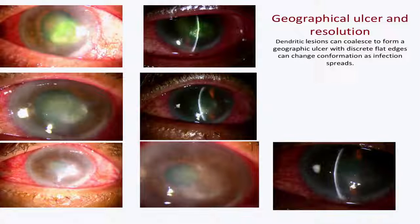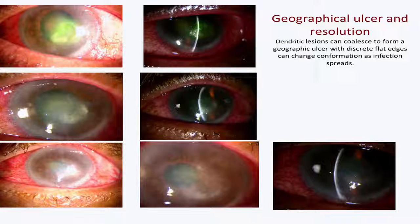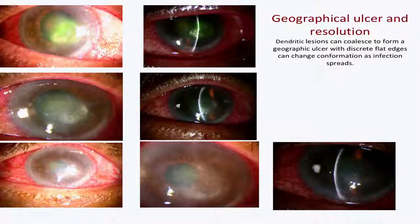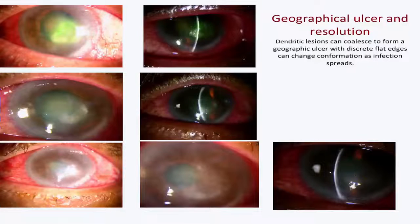After epithelial keratitis, we have to understand: is the virus growing, or is it inflammation associated with viral keratitis? The other form is a geographical ulcer — when the bulbs grow and coalesce into an amoeboid-looking ulcer. Sometimes patients just come to you like this after having received different treatments. When you stain it, you can see it clearly. There is present epithelial deficiency and underlying stromal edema.